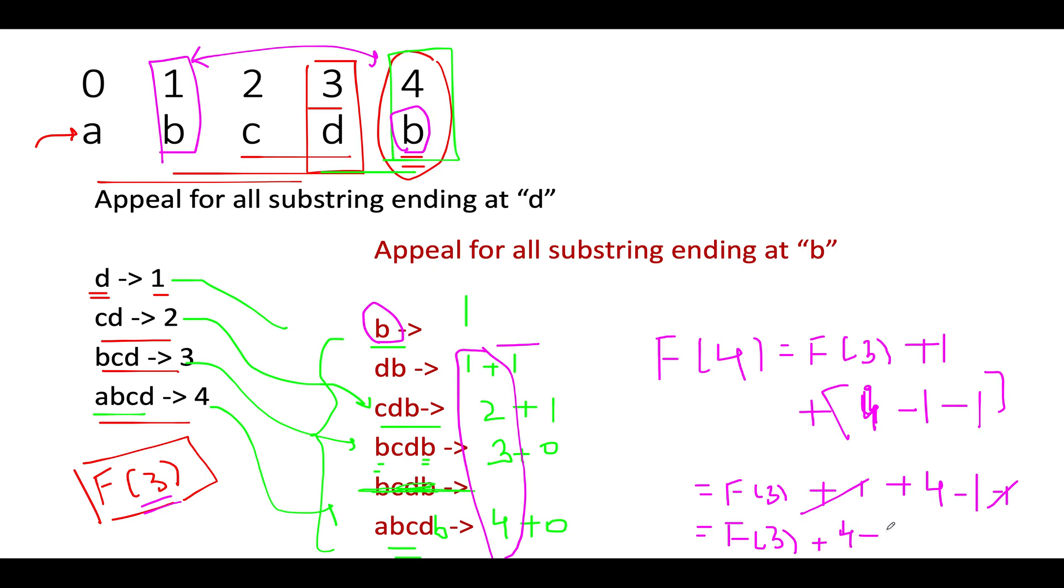What is left is F of three plus four minus the last occurrence of b. So if I write this in mathematical format in terms of i, what do I get? I get F of i equals to F of i minus one plus i minus the last occurrence of this current character that you are witnessing.